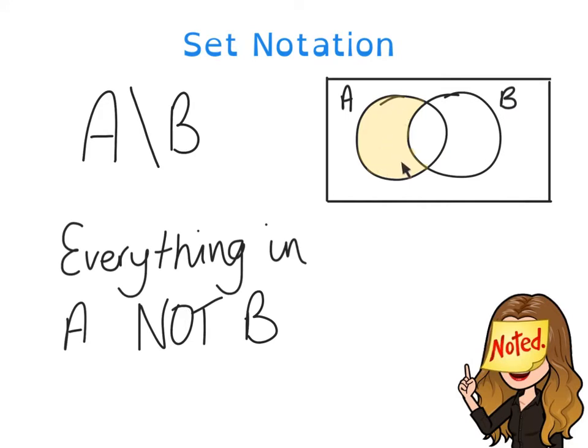This shaded area refers to everything in A, not B. Everything in A that has nothing to do with B. We can't include the intersection because that includes B. The same way if you said B, not A, it would be everything in this part of B, but not A.